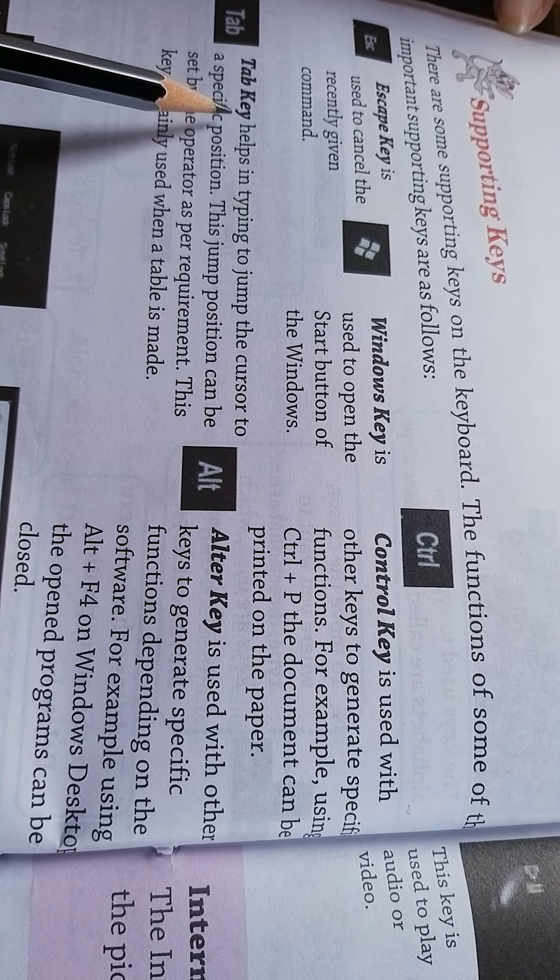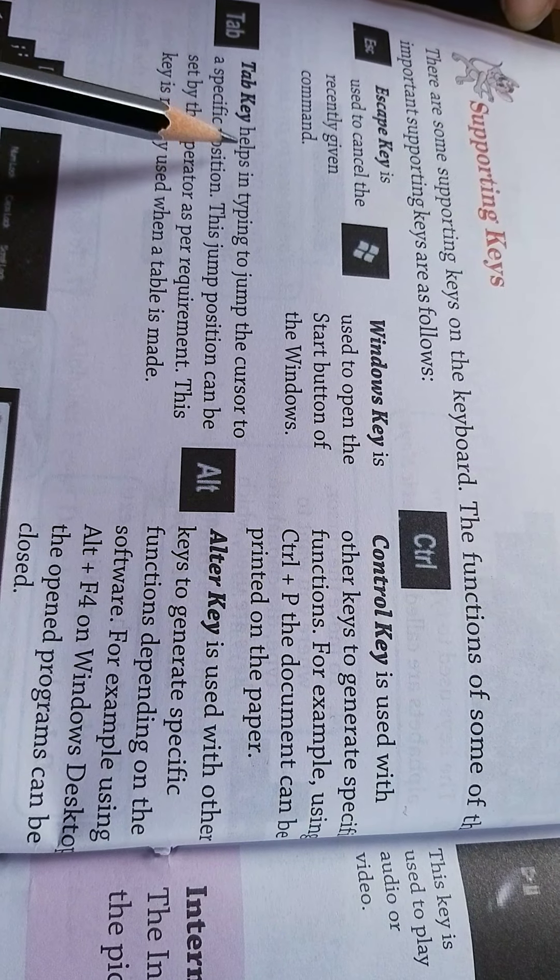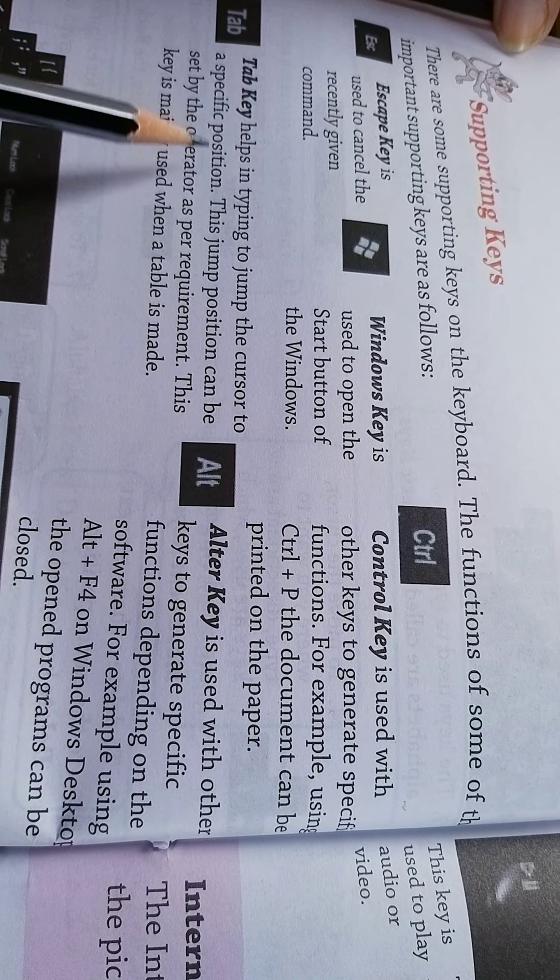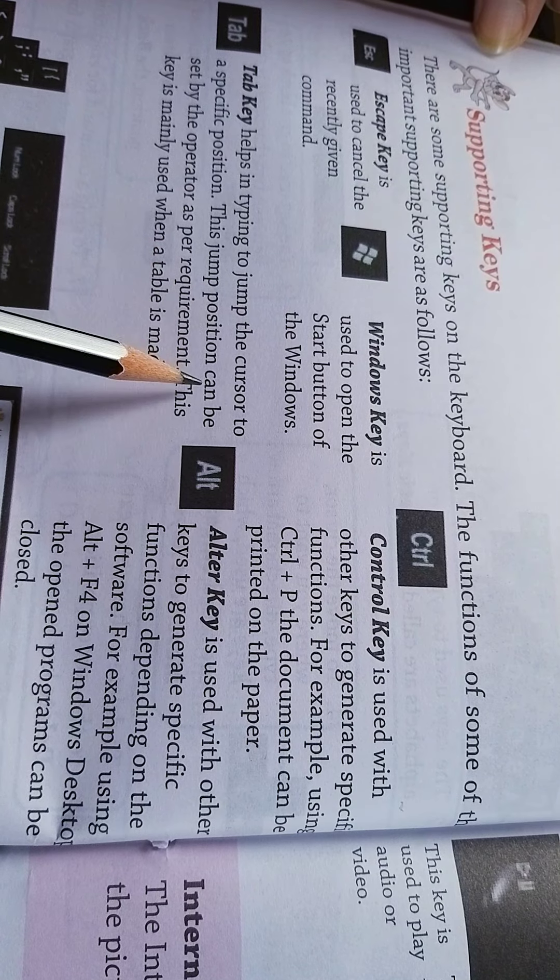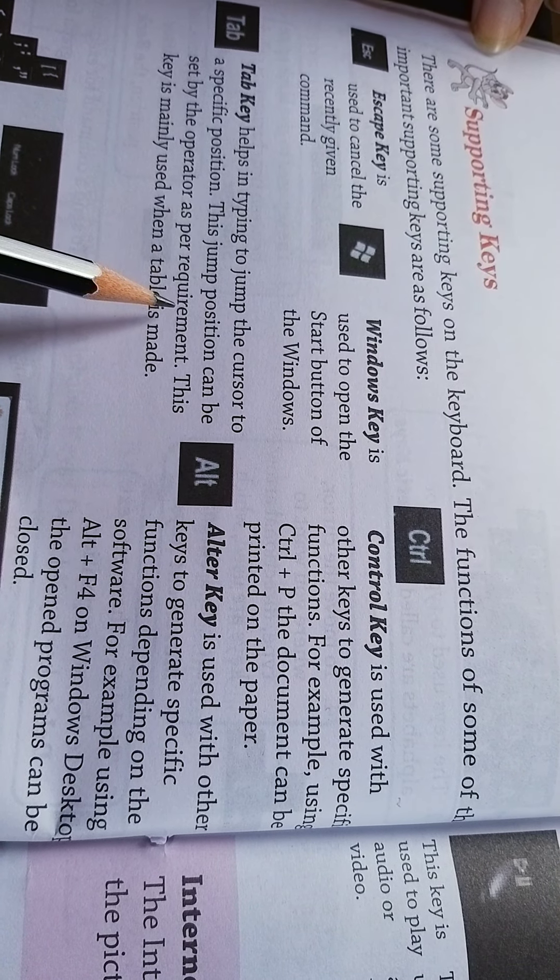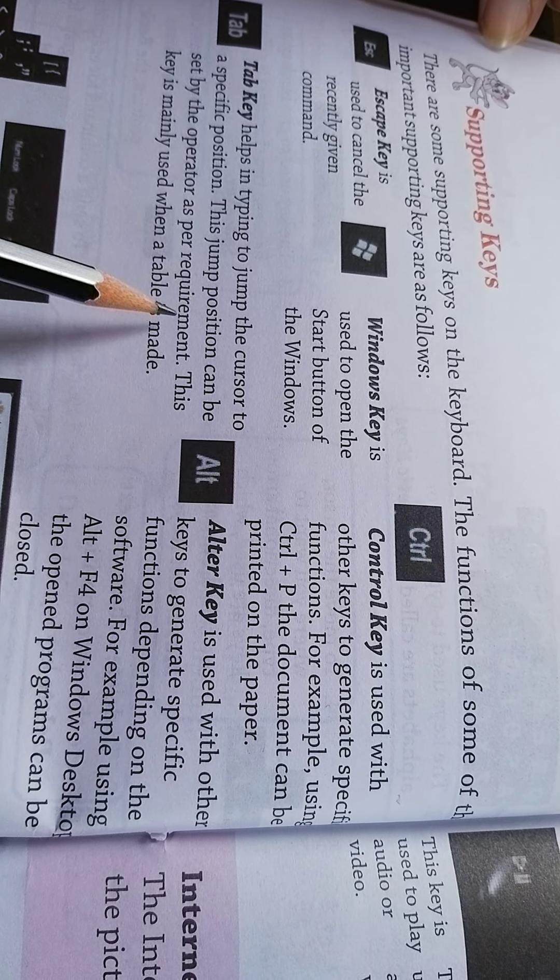Tab key helps in typing to jump the cursor to a specific position. This jump position can be set by the operator as per requirement. Requirement means need.